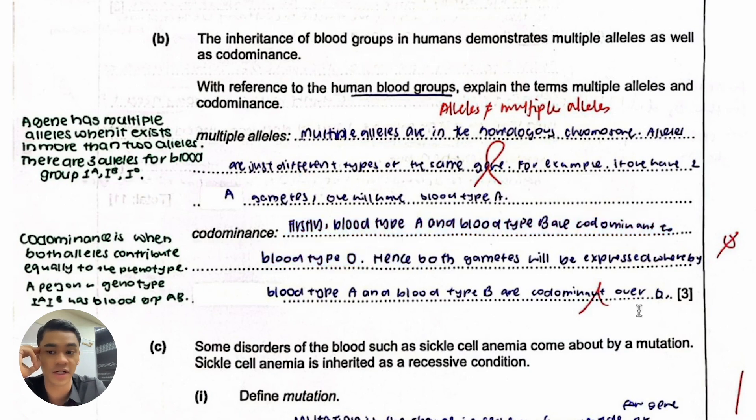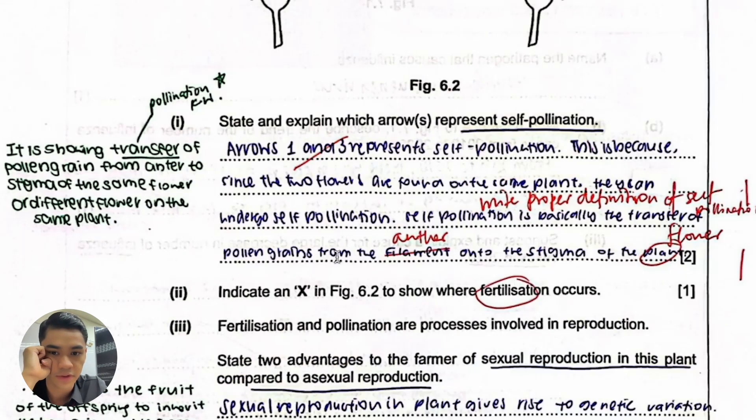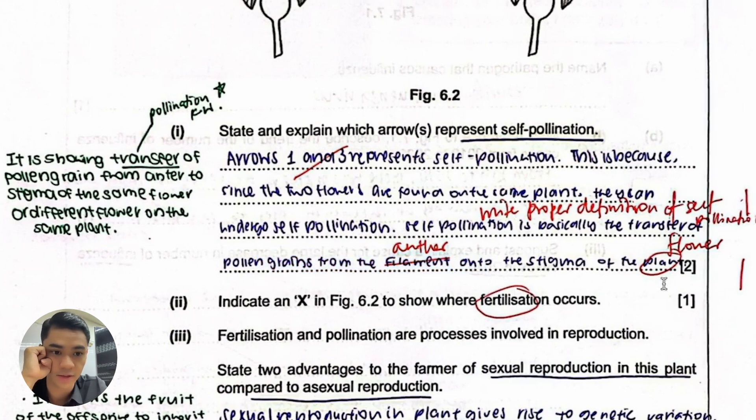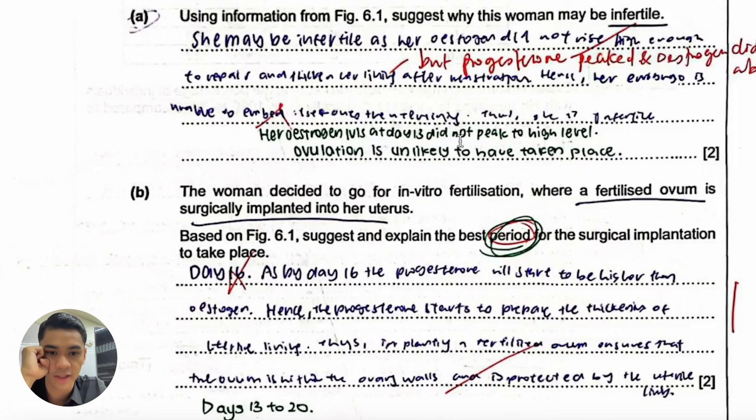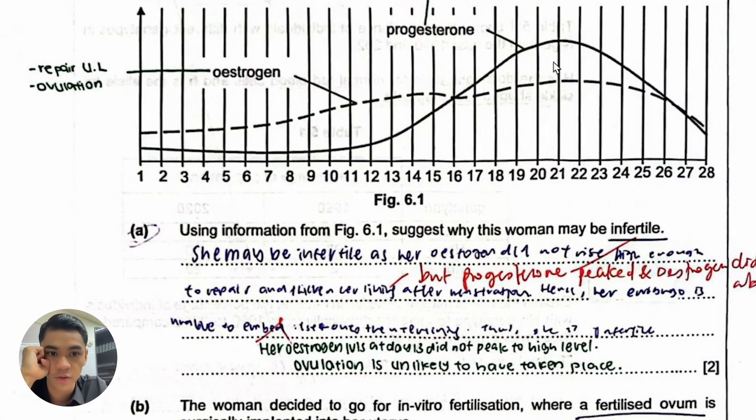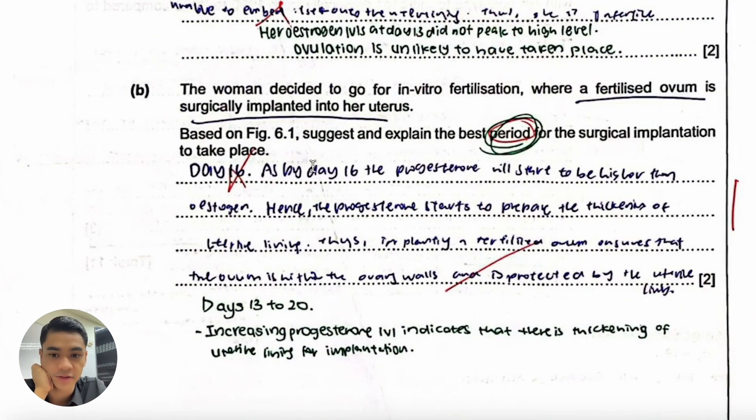I also see some content reasons. For example, pollen grains don't come from the filament, they come from the anther. And this one, when is the best period for implanting a fertilized ovum? Actually the closer you are to day 21 where it's very high both hormones, that is the best because the lining is at the thickest. So I would actually write somewhere around here instead of day 16.